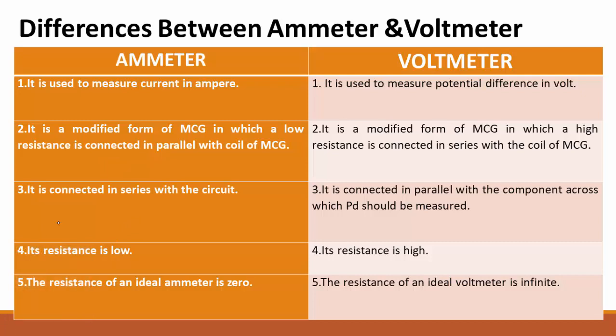Ammeter is the device which is used to measure the current in ampere. Voltmeter is the device which is used to measure the potential difference in volt. The SI unit of current is ampere, mathematically denoted by the symbol A. The SI unit of potential difference is volt, mathematically denoted by the symbol V. Both ammeter and voltmeter are modified forms of the moving coil galvanometer.